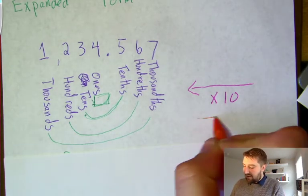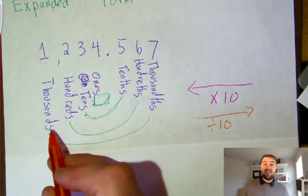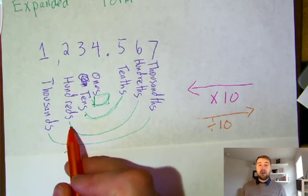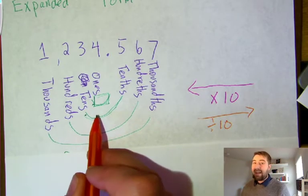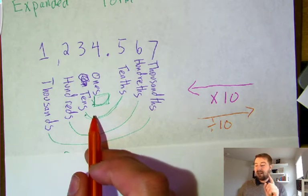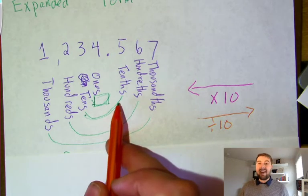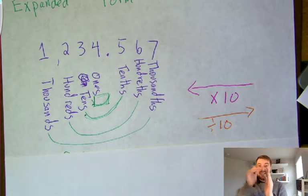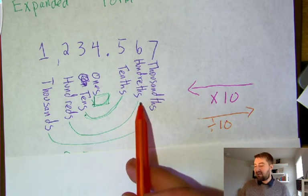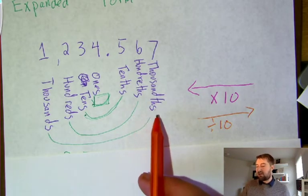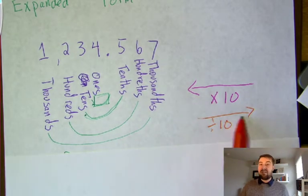The exact opposite is also true. Moving from left to right, we divide each one by ten. One thousand divided by ten is a hundred, one hundred divided by ten is ten, ten divided by ten is one. If we split one unit into ten pieces, we end up with tenths. Divide a tenth into even more parts and we get hundredths. Divide hundredths by ten and we get thousandths. Left to right, we divide by ten.